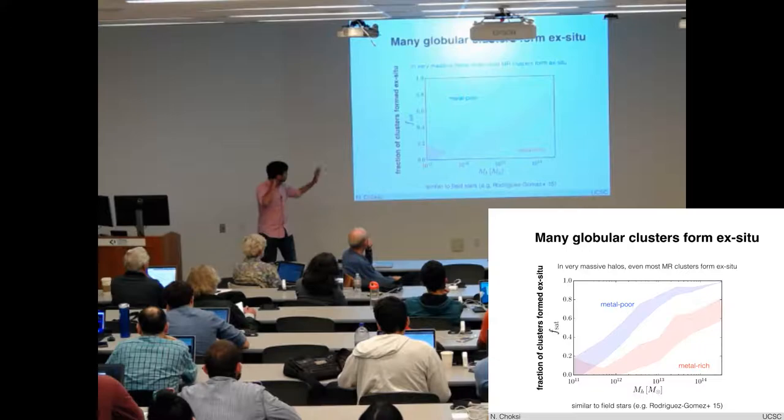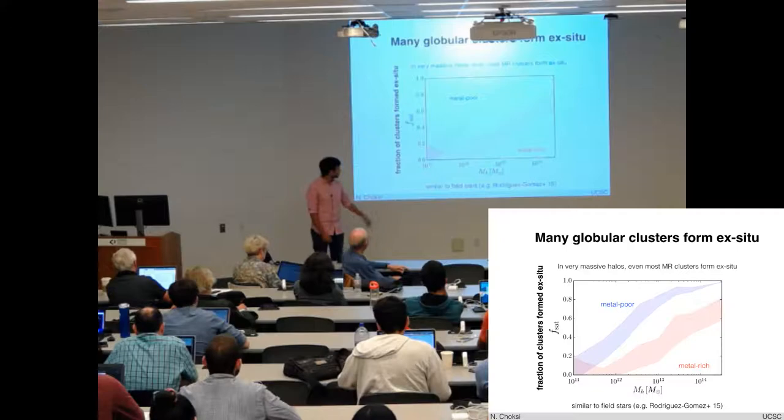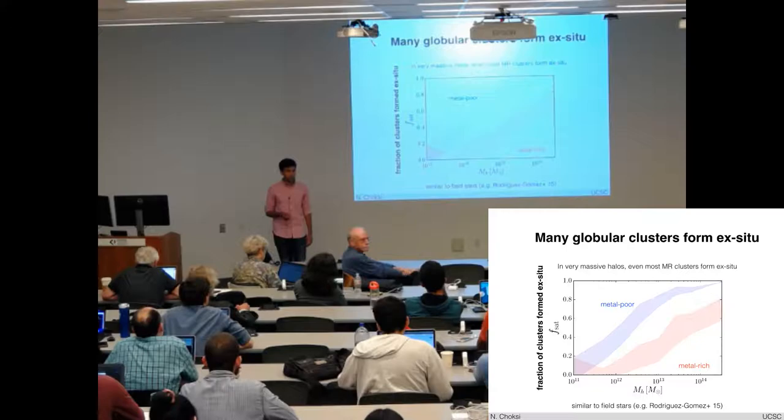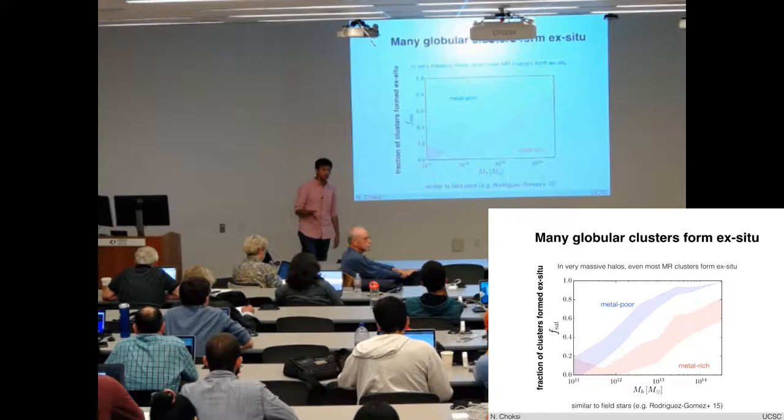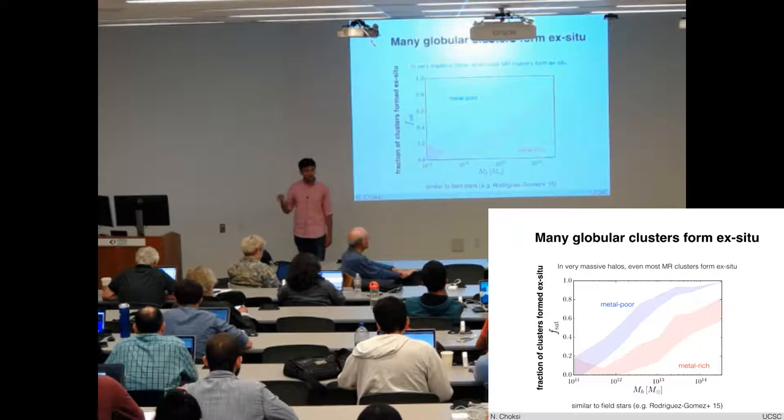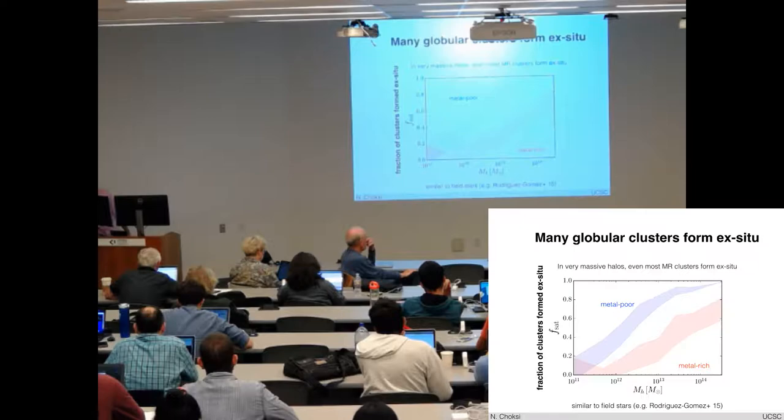Motivated by this, we want to just check what fraction of the clusters are forming in situ versus forming in satellites and merging in later. And that's what's plotted on the y-axis here. And I've split, again, into metal poor and metal rich. What you see is that at low halo masses, most of the clusters form in situ. But as you move to higher and higher halo masses, especially around ten to the thirteen and a half and later, almost all of the clusters are forming ex situ. And even though the metal rich clusters are forming preferentially in situ, compared to the metal poor ones, once you've gotten to these very high galaxy or halo masses, almost everything is coming from satellites. And again, similar to what we see for the field stars, at least in Illustrious.